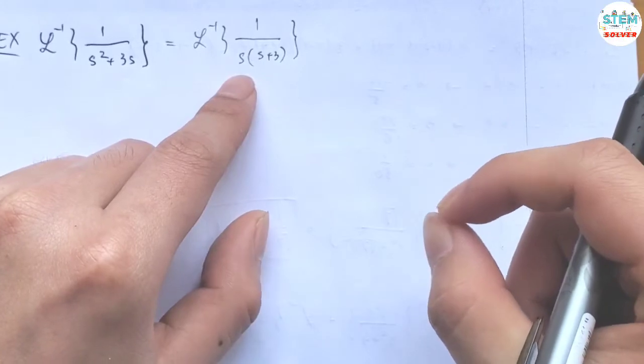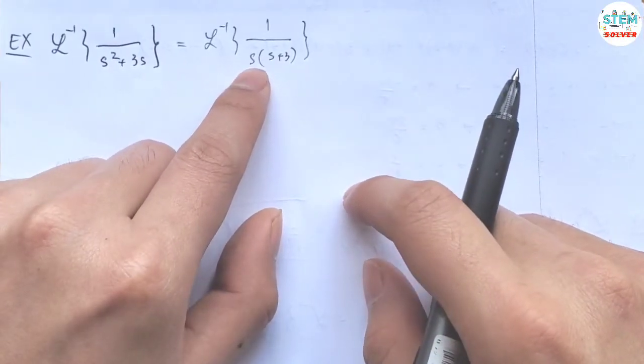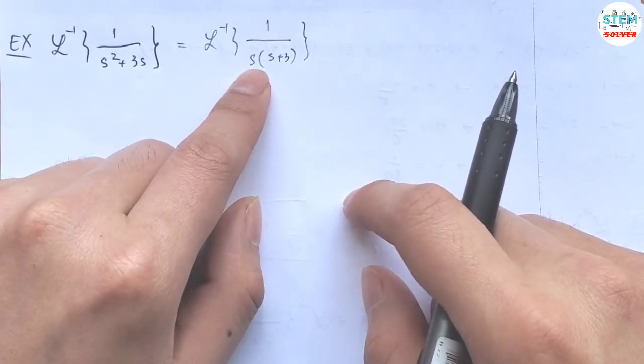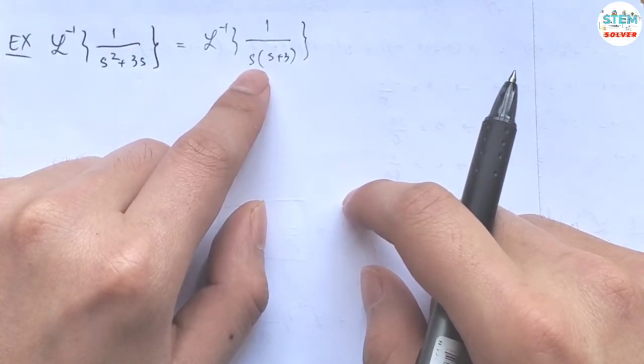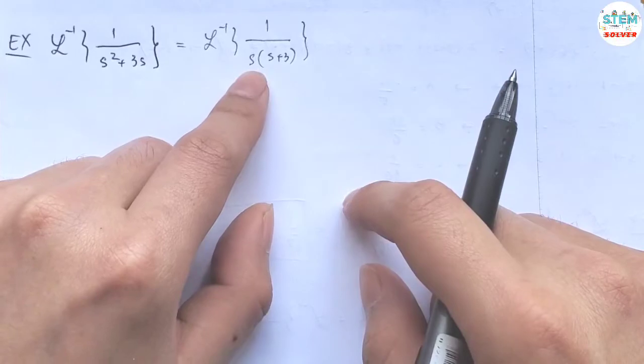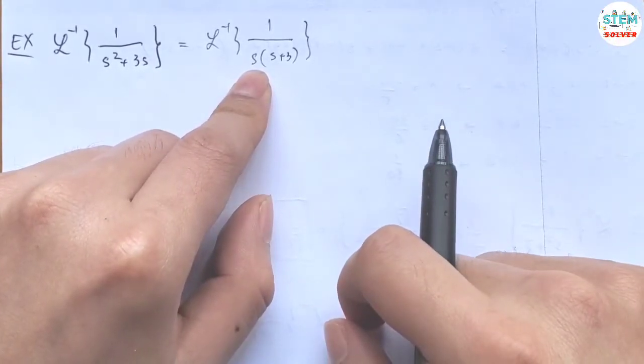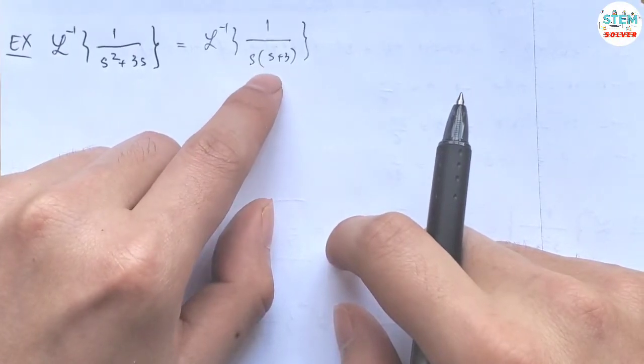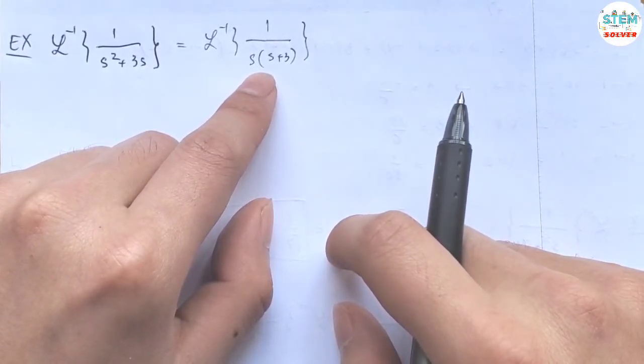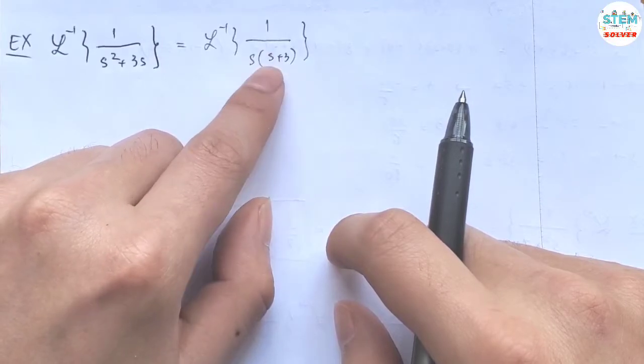Now I can find the inverse of this because this is a product. So somehow I need to make it in one of the forms I know to find the inverse. For this one, you have to fall back to the partial fraction to get two fractions. So for this one, you might use partial fraction decomposition method to find the fractions of this.